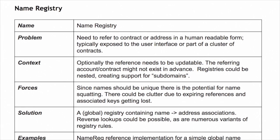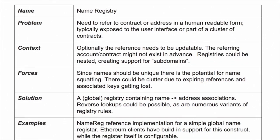The solution is a global registry containing name-address associations. There are many varieties of rules you could implement, including market dynamics, exchange, locking, and expiration. It also allows for reverse lookups — given an address, which name is registered to it — contrary to the forward lookup of giving a name and getting an address.